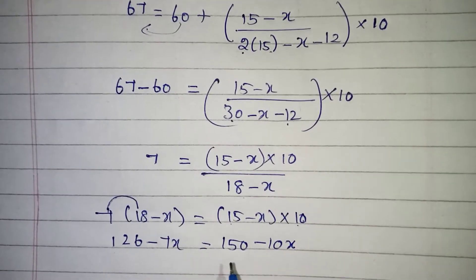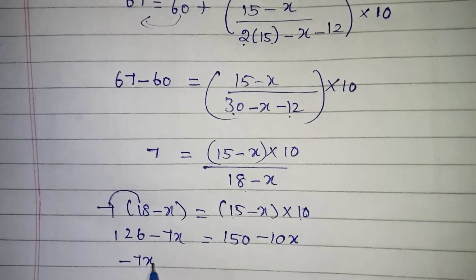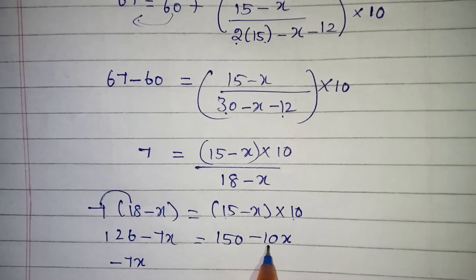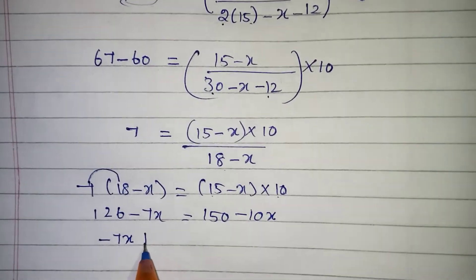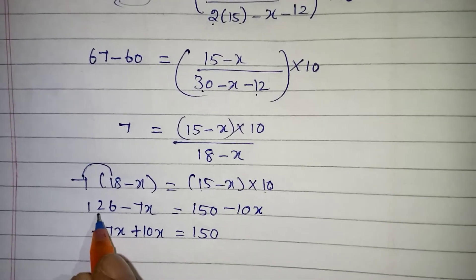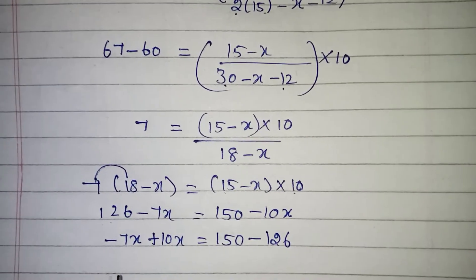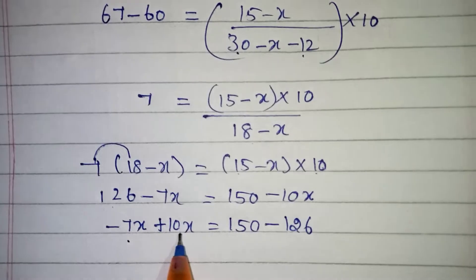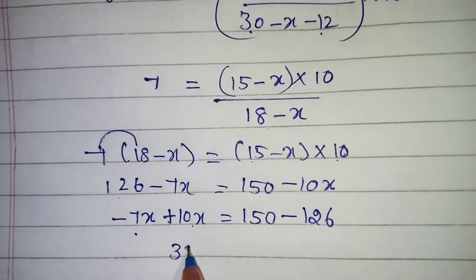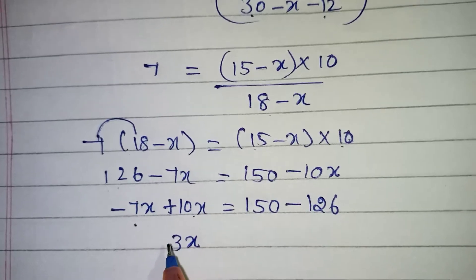So let's bring all the X together and numbers together. So minus 7X is already this side. Now the plus 10X we are bringing to other side it will become plus 10X. Now this side we have 150. Now this plus 126 we are taking to other side that will become minus 126. Now minus 7X plus 10X it will be 3X.